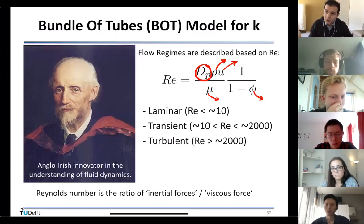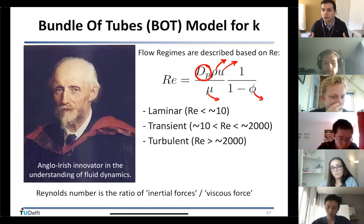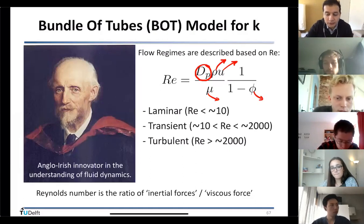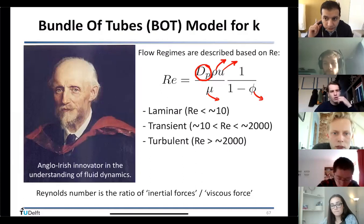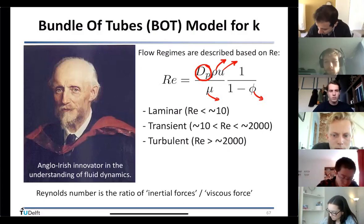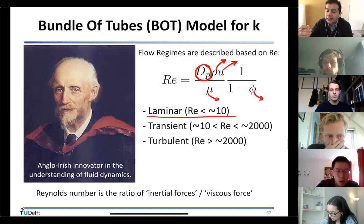We are dealing with Darcy's law and subsurface flow, focusing primarily on laminar flow — Reynolds numbers well below 10. What is the typical speed of fluid flow in subsurface formations like oil and gas reservoirs or geothermal? A good estimation is about one foot per day — that's how slow fluid moves underground, which keeps us firmly in the laminar regime.